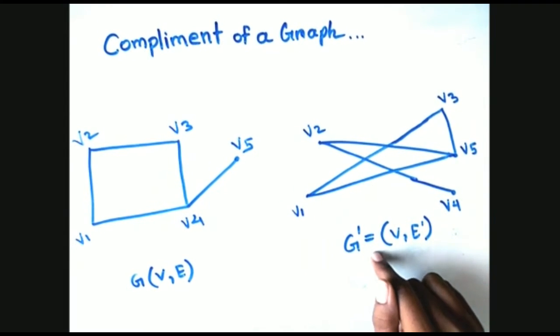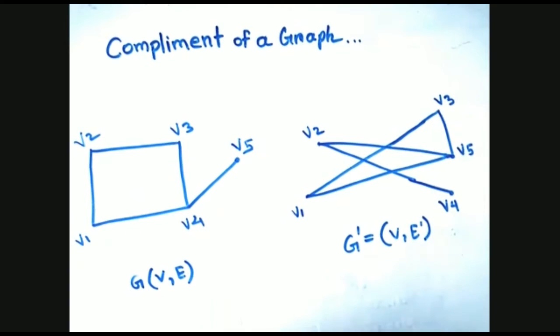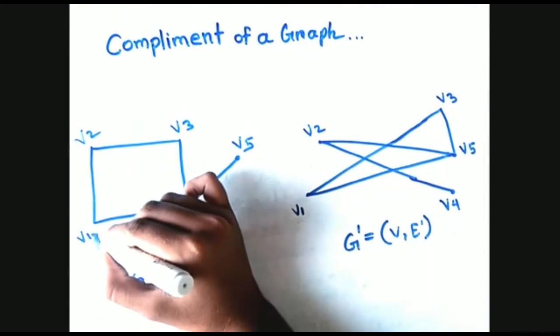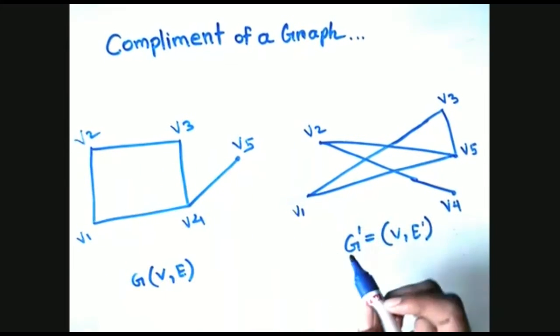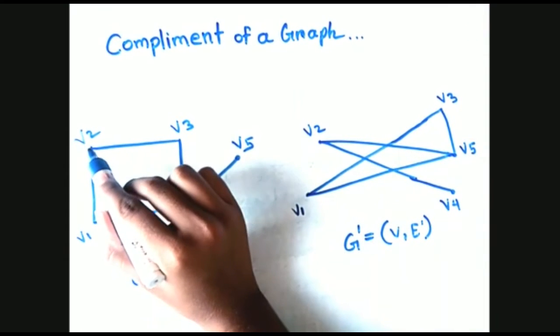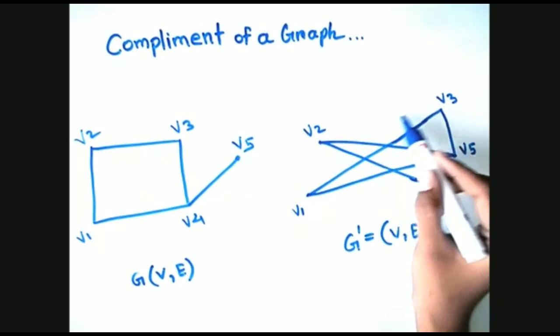Here G' is the complement graph of graph G. Between v1 and v2 an edge is present in G' but in graph G the edge is removed. Similarly, between vertices v2 and v3, an edge is present in G' but in graph G the edge is removed.